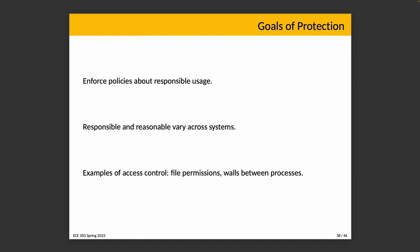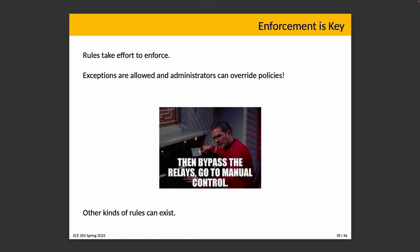Operating systems enforce logical walls between processes. As we go through the course, we'll see a few examples — for one, the memory of a given program is not accessible to other programs. Rules, however, take effort to enforce: every request or action has to be checked by the operating system to make sure it is valid, meaning in compliance with the rules. There are exceptions — administrators can override some but probably not all policies. You can make a file public to intentionally allow others to access it, or ask your program to access shared memory so another program can share the same segment, and administrators can do things like read files that belong to somebody else. You can see why we need a lot of trust in our administrators.